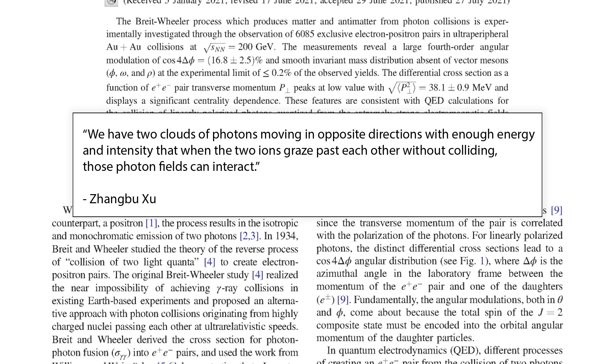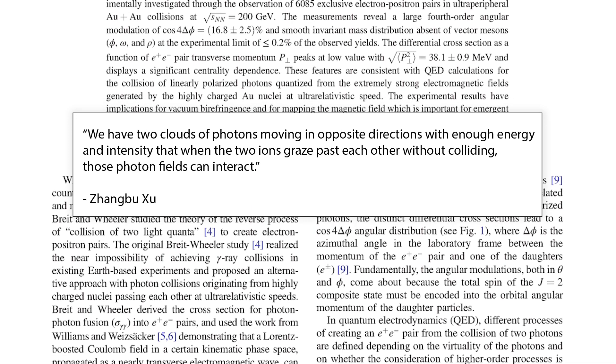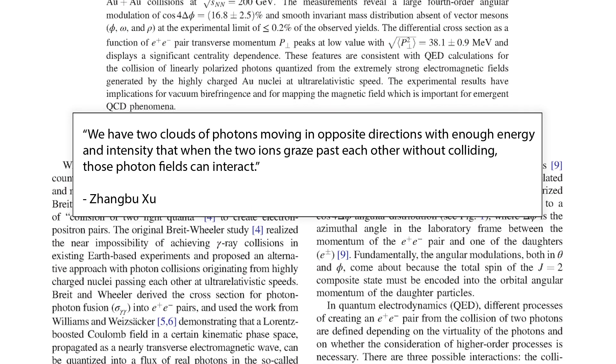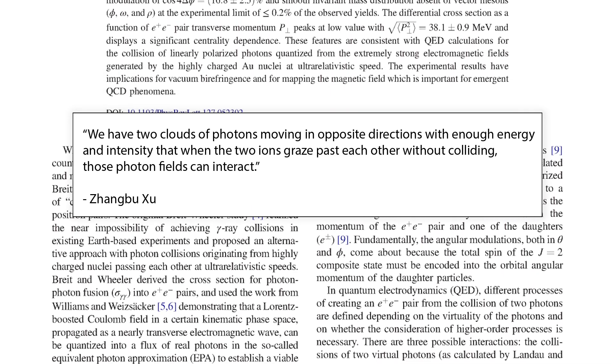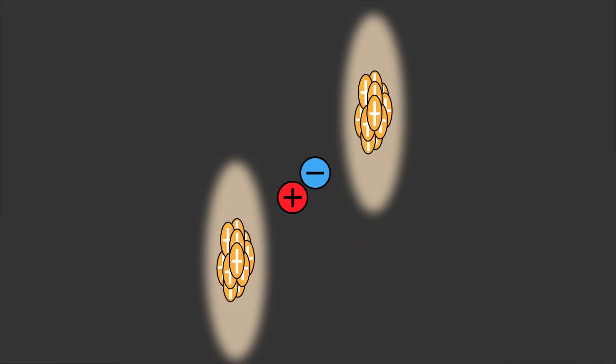we have two clouds of photons moving in opposite directions with enough energy and intensity that when the two ions graze past each other, without colliding, the photon fields can interact. And the idea is to have these photons interact to produce the Breit-Wheeler interaction.